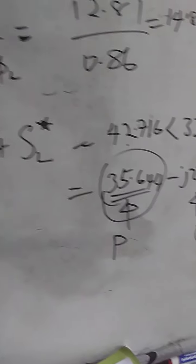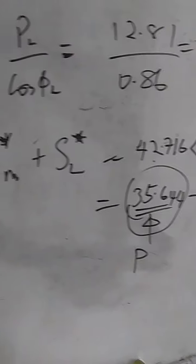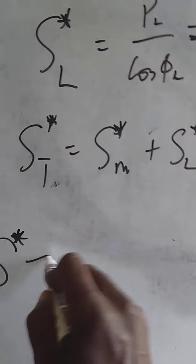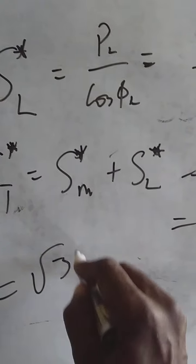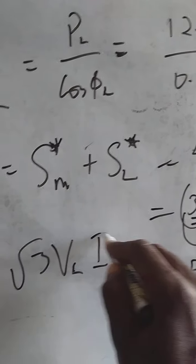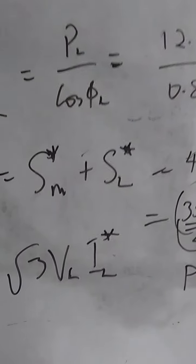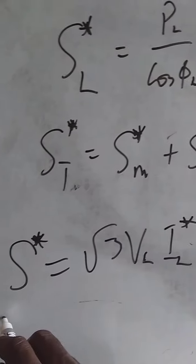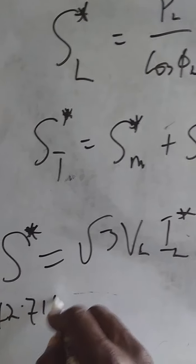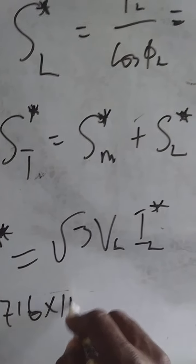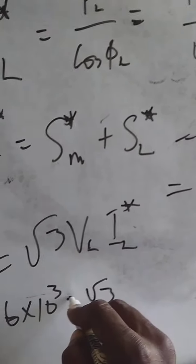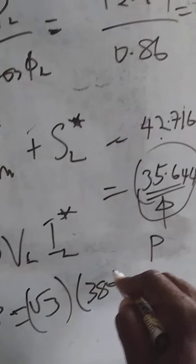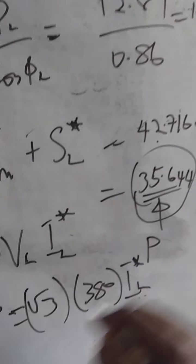Then, the next thing, we are asked to determine the line current. To determine the line current, we know that our S, that is the capacity of total load on the line, is equal to root 3 line voltage times line current conjugate. If you substitute, what is our total capacity? Our total capacity, it is 42.716 KVA, which is times 10 to the power 3, is equal to root 3 times the line voltage given in the question, which is 380.